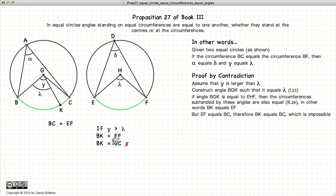Well, BK equals BC cannot be true. So therefore, we have demonstrated that the angle BGC is equal to the angle EHF. Or in other words, gamma is equal to lambda.